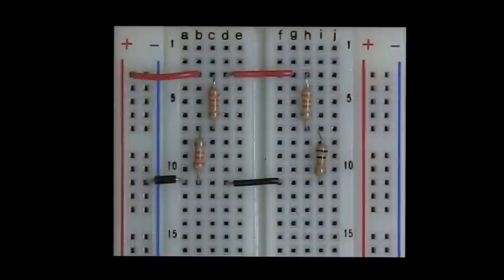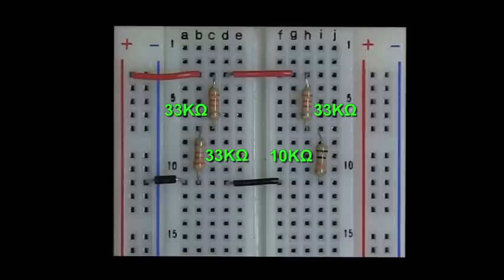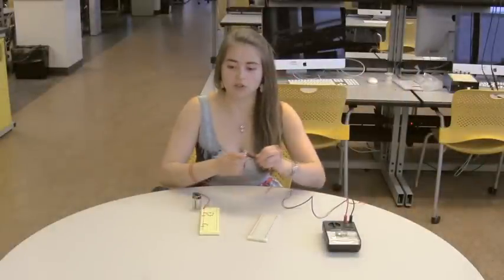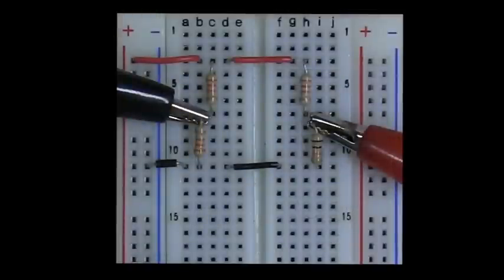For this, we'll set up the resistors on opposite sides of the breadboard, so that they don't make contact, and then we connect the battery. We'll measure the voltage across these two terminals here. And that gives us a reading of 2.4 volts.